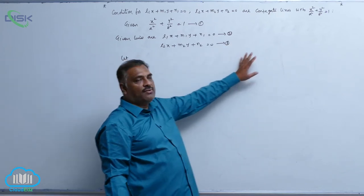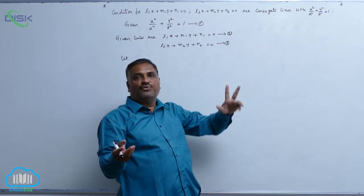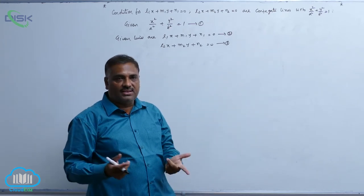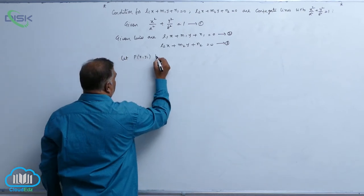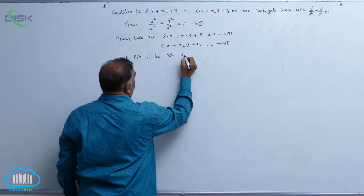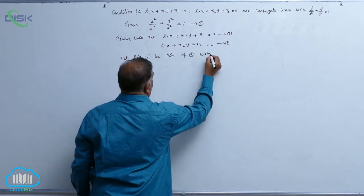The reason we need to derive a condition for conjugate lines means we need to find out pole of any one of the lines. Let us consider px1y1 be pole of 2 with respect to 1.